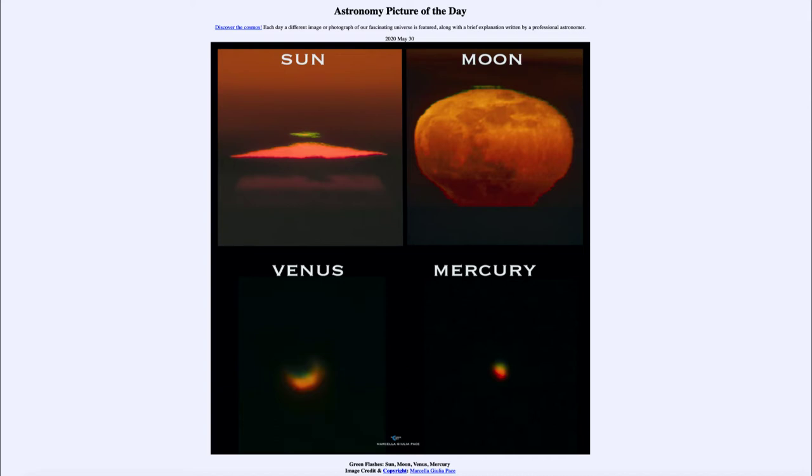Now this occurs because the light has to pass through the Earth's atmosphere. If the Earth had no atmosphere, we would not get a green flash at all. However, when light passes through the atmosphere, it is bent or refracted. And the refraction depends on the wavelength of the light. So shorter wavelengths like the blues and the greens are refracted more. And longer wavelengths like the reds and oranges are refracted less.